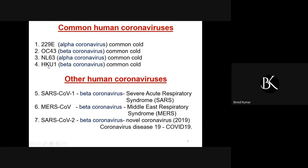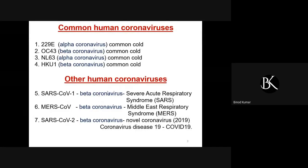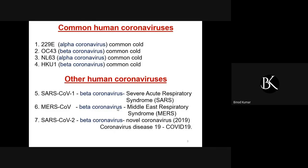It was in 2002 when a new strain of coronavirus emerged from the beta coronaviruses category and it was termed SARS-CoV-1. It belonged to the beta coronaviruses and it caused severe acute respiratory syndrome, which was a very severe pathogenic condition in the human body.